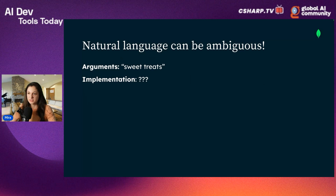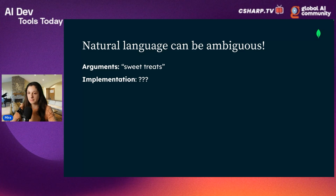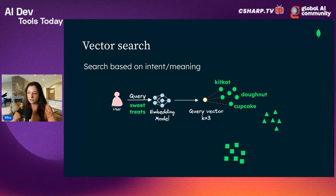We need some sort of search that is appropriate for natural language, and this is where vector search comes in. When we use vector search, we're not searching for exact keywords — we are searching based on the intent or meaning of the user. So if the user searches for 'sweet treats' using vector search, we should get back KitKat, Donut, and Cupcake. As you can see, there's no exact keyword match, but these are semantically close to the 'sweet treats' query.